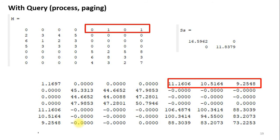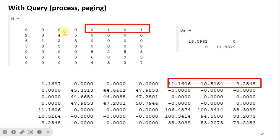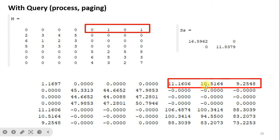For another example, the query contains 'process' and 'paging', which are related to the operating system concept. Again we apply SVD, choose the 2 largest singular values, and construct the result. We observe that documents D1, D2, D3 have no association, but D4, D5, D6 have associations and are retrieved. So the system retrieves results based on concept, not just keywords.